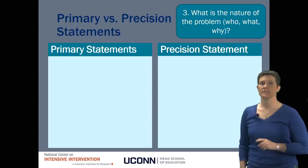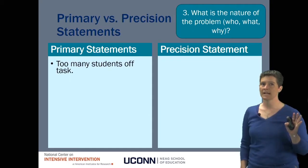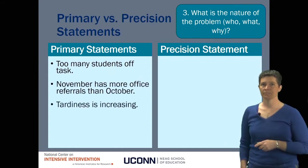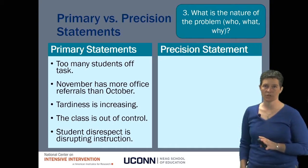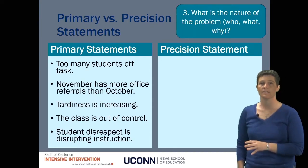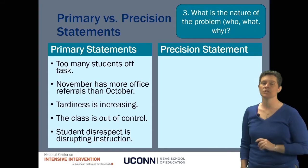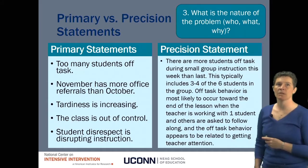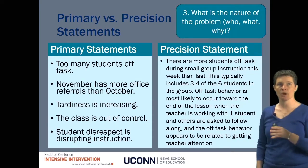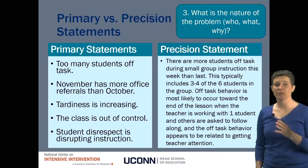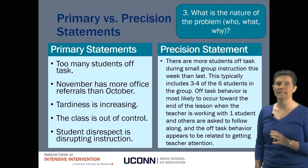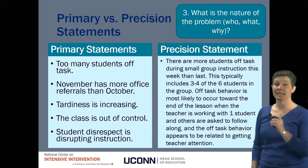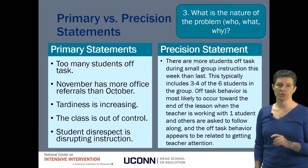Examples of primary statements include: 'There are too many students off task in my class,' 'November had more office referrals than October,' 'Tardiness is increasing,' 'This class is out of control,' 'The student's disrespect is disrupting instruction.' All of those may be true and causes of concern, but none of them point you directly towards a solution. A precision statement would look like: 'There are more students off task during small group instruction this week than last. It typically includes three or four out of six students. Off task behavior is more likely toward the end of the lesson when the teacher is working with one student and others are asked to follow along, and that off task behavior appears to be related to getting teacher attention.' That precision statement has a lot of information to help guide what we should do.